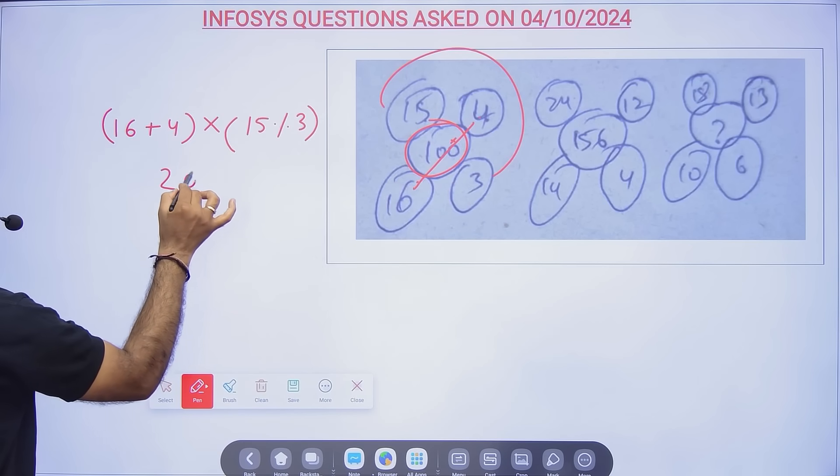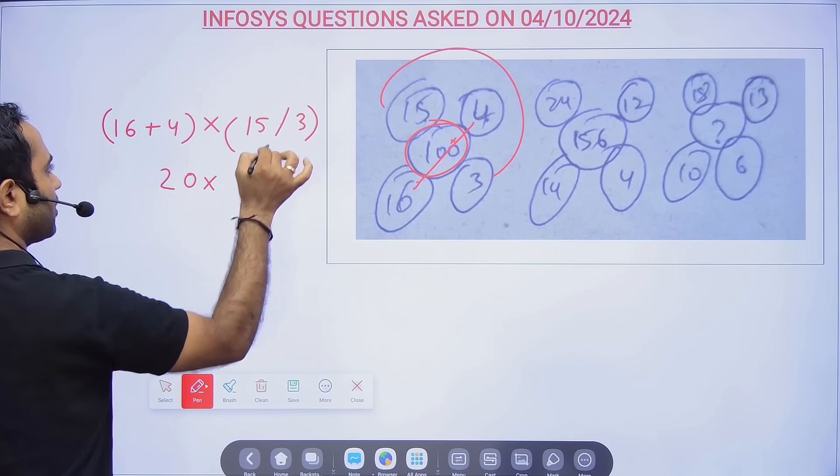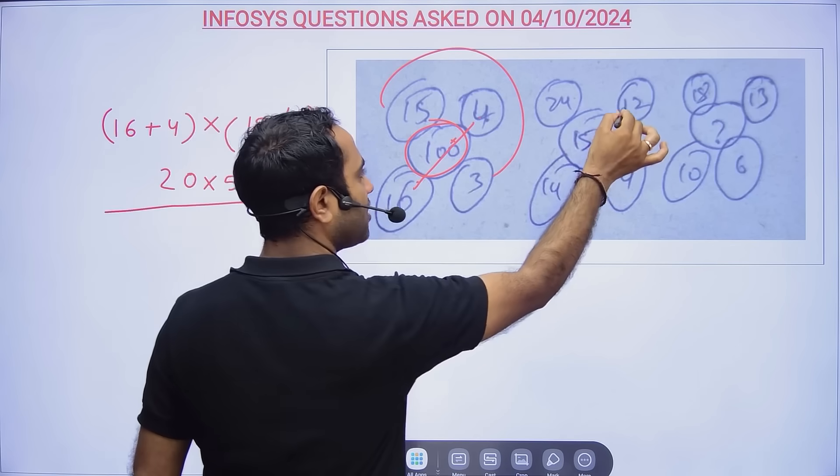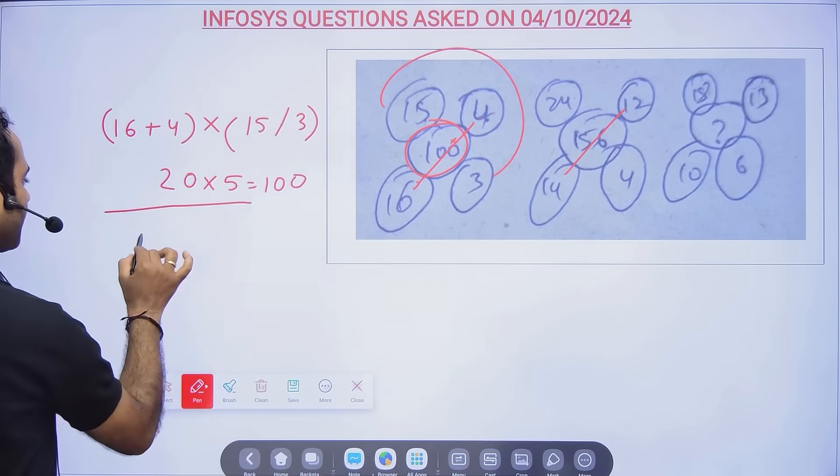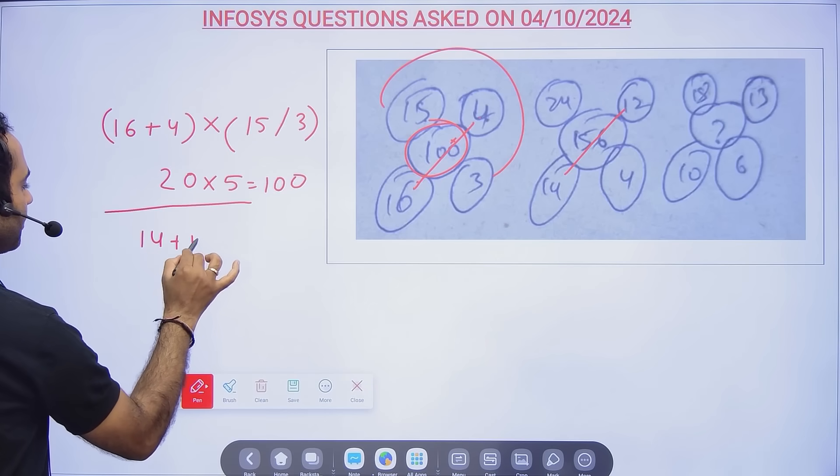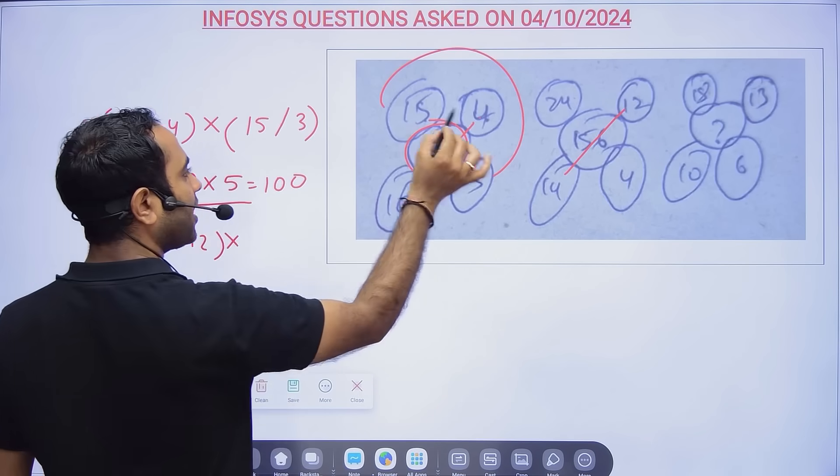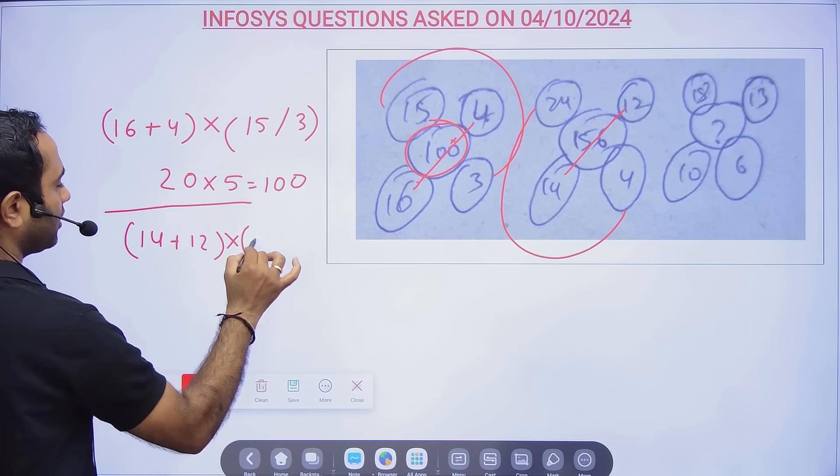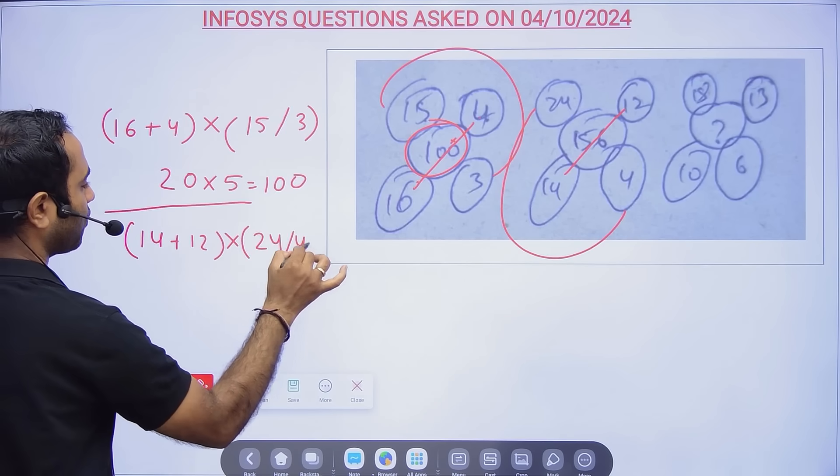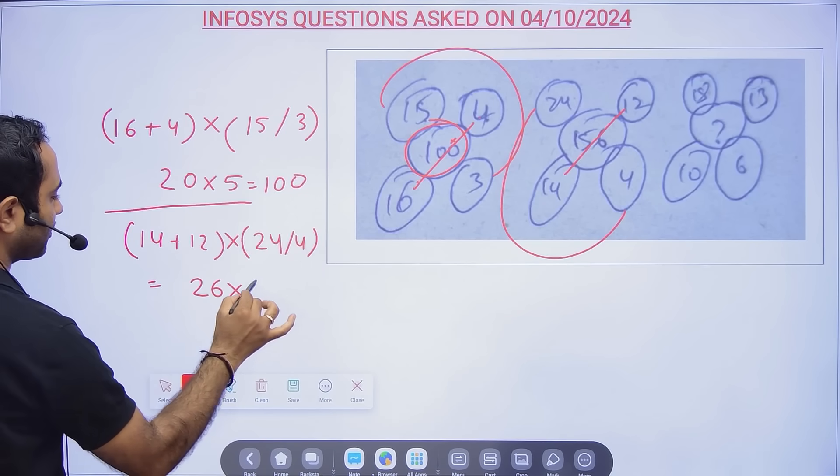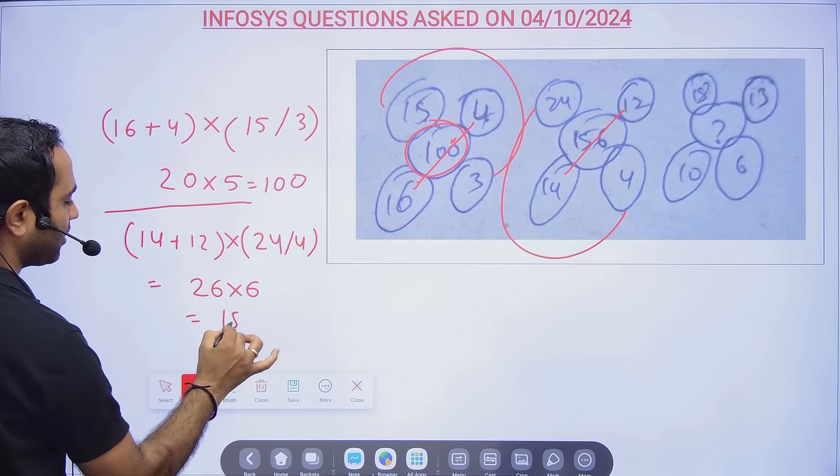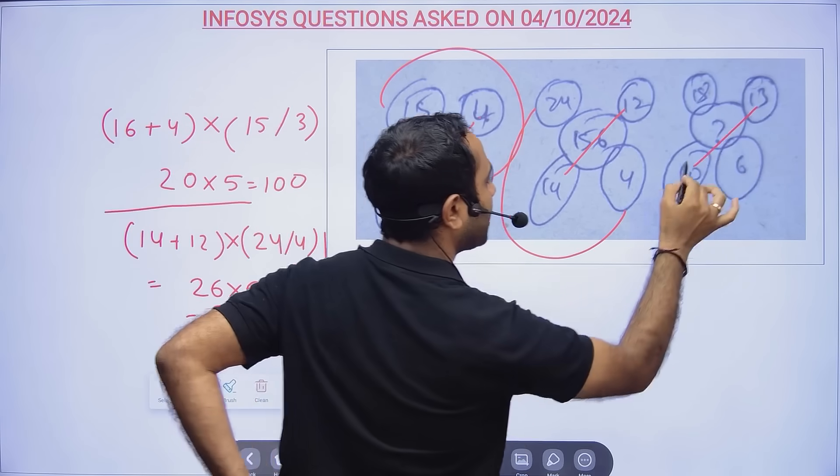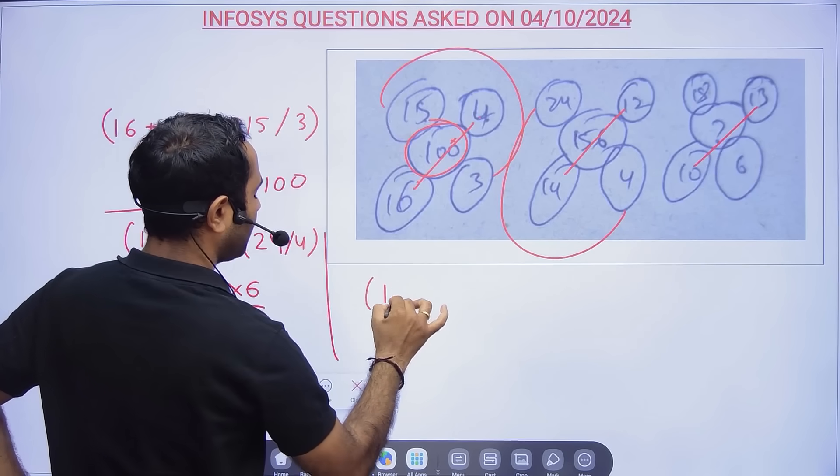Same thing here also: this 2 you add, 14 + 12, and then multiply by 24 ÷ 4. So 24 ÷ 4 = 6, then 26 × 6 = 156.